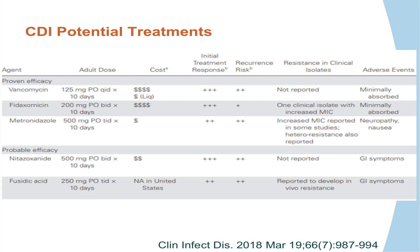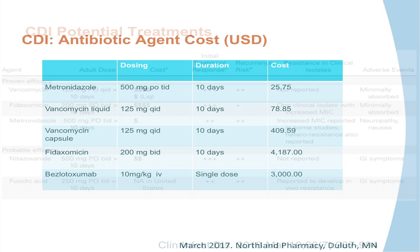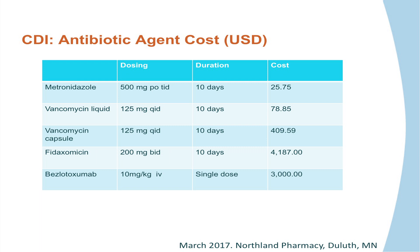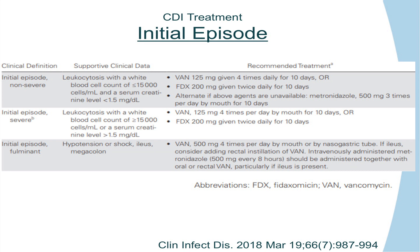Potential treatments include vancomycin, fidaxomicin, and metronidazole. Vancomycin by capsule is expensive, but the liquid formulation is cheaper — many providers don't know this. Fidaxomicin is also expensive; cost was not taken into consideration when making the new guidelines. Metronidazole is listed as an alternative but is no longer recommended as a primary treatment for C. diff.